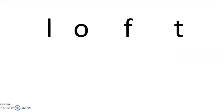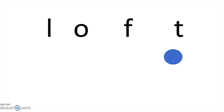Here's the word L-O-F-T — four letters that make four sounds. It is a closed syllable because it has one vowel O that's closed in by F and T. So now I can blend these letters together to read the word: L-O-F-T — Loft.